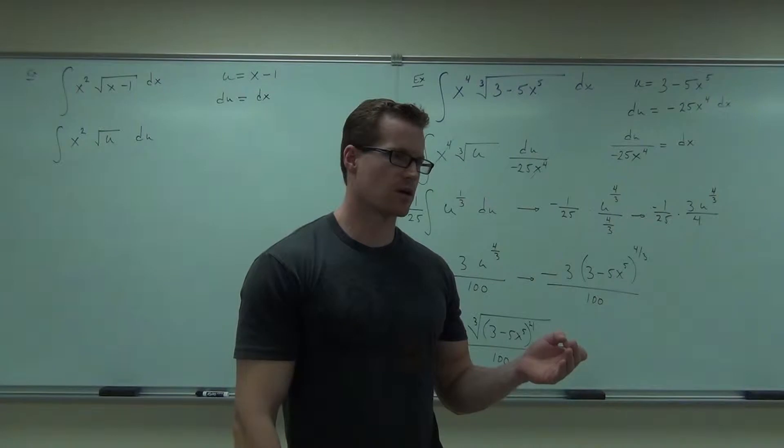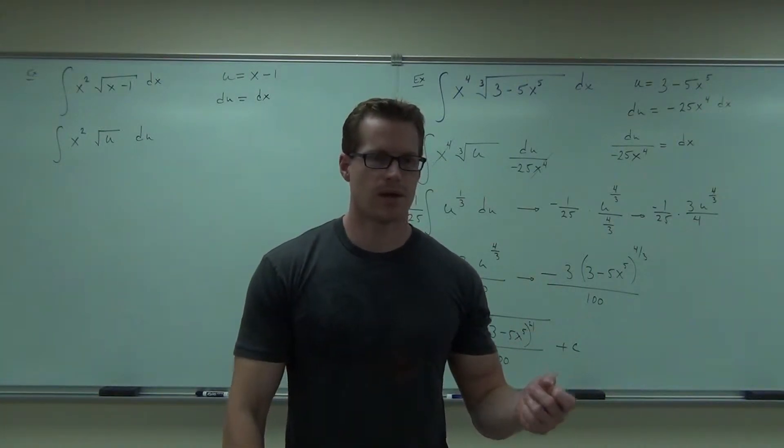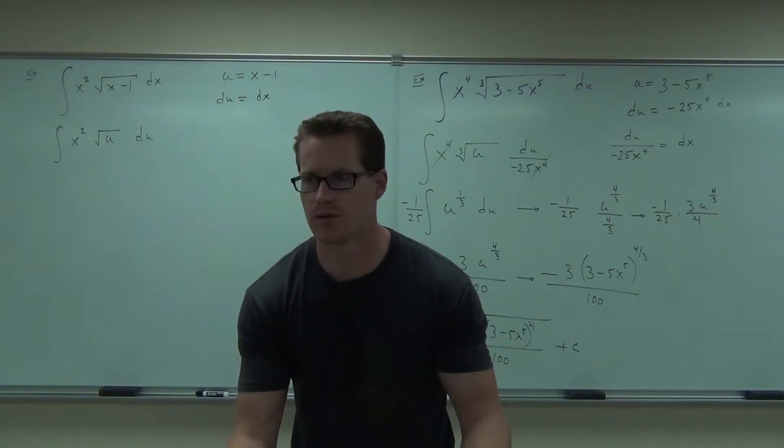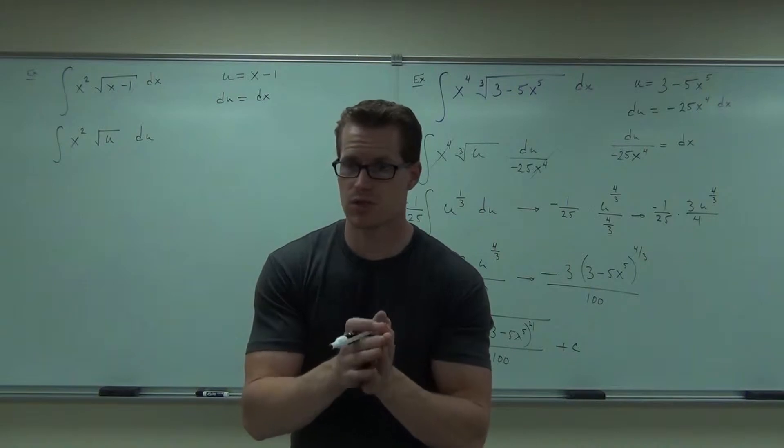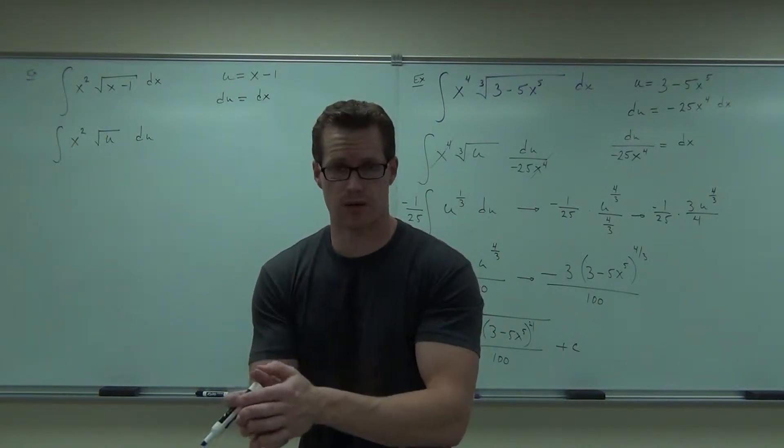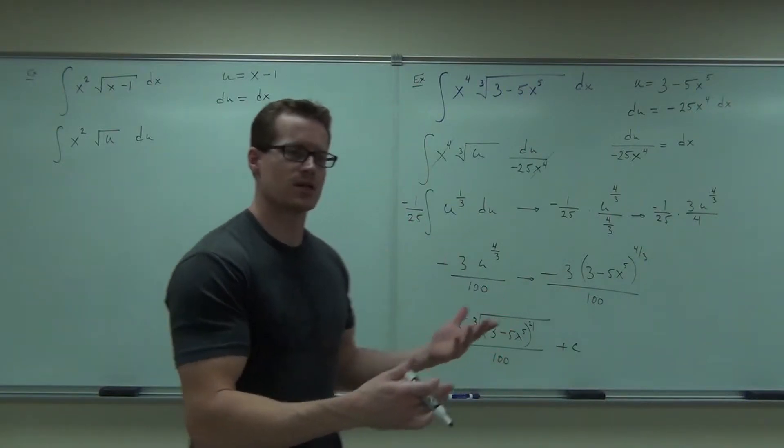We could maybe manipulate the substitution we have to fit that. For instance, look at our substitution. It's u equals x minus 1. Here's the logic here. What if I can somehow make another substitution for x squared? If I can do that, maybe it'll work. I don't know. We're trying here. But maybe we can do that.